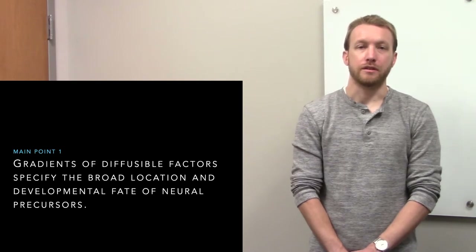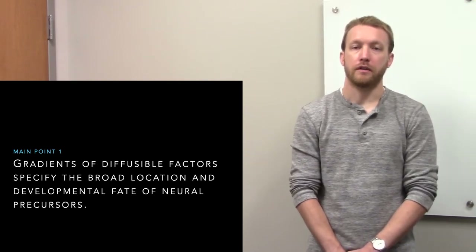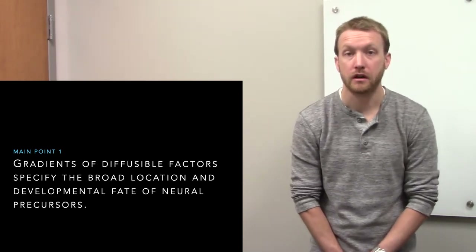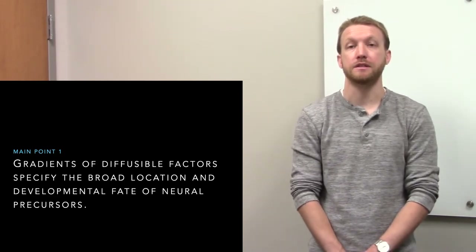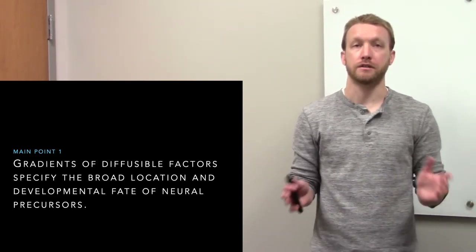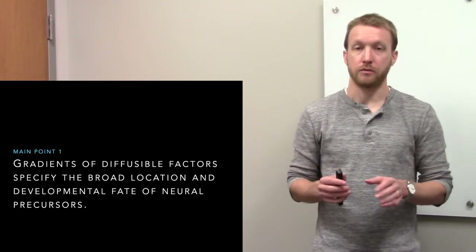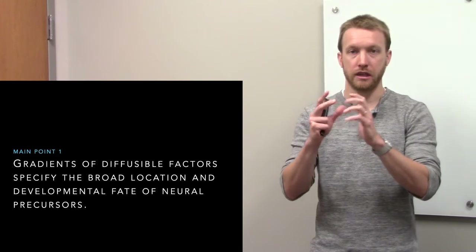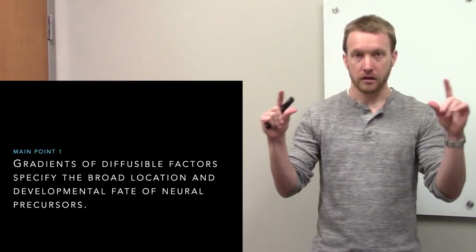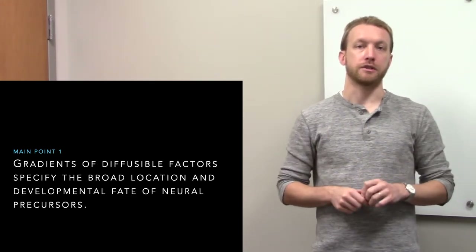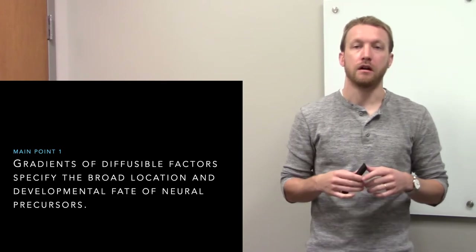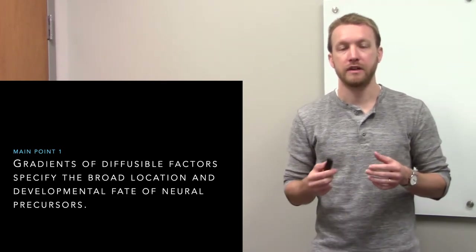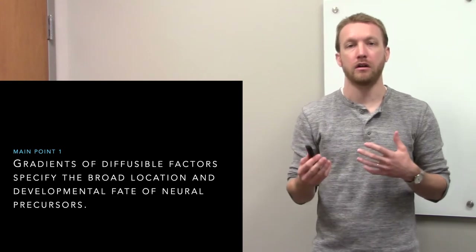Cells don't really know where they are — they have to figure it out by listening to their neighbors. Neighbors talk to them by releasing diffusible factors that create a gradient: high concentration near the releasing cells, lower as you move further away. Based on exposure to different diffusible factors, neurons can figure out where they are in the body.